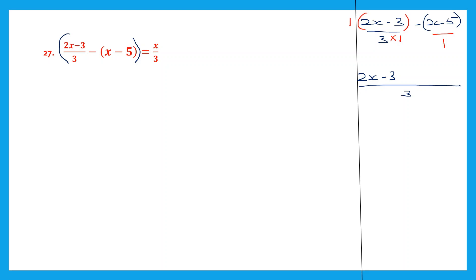So 1 into that term will give us the same thing as it is, because it's multiplication by 1. So we write that as it is. 1 3s are 3, so we multiply this by 3, or we can multiply it by minus 3. Minus 3 into x is minus 3x. Minus 3 into minus 5: minus into minus is plus, 3 5s are 15. Now let's take the like terms 2x and minus 3x.